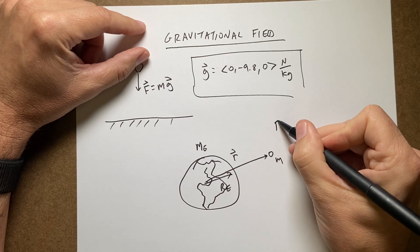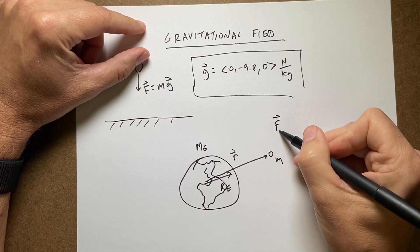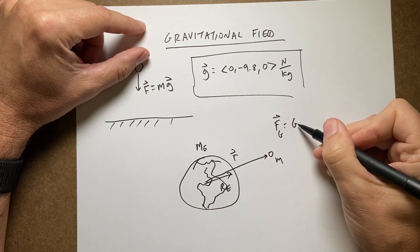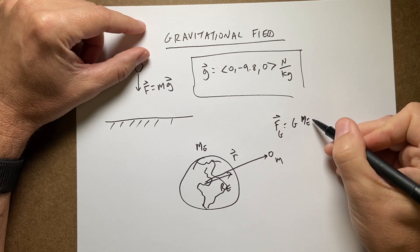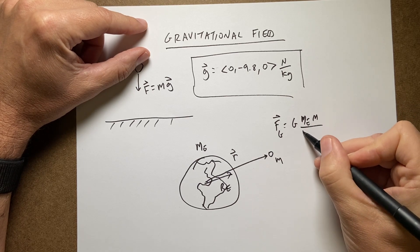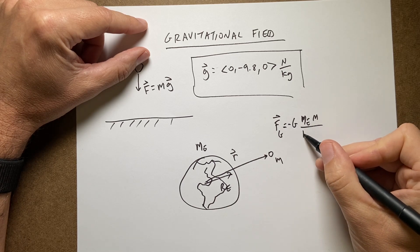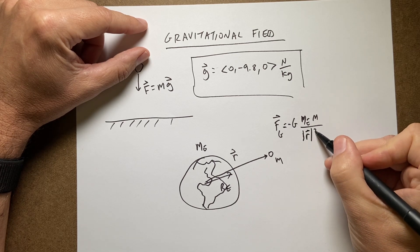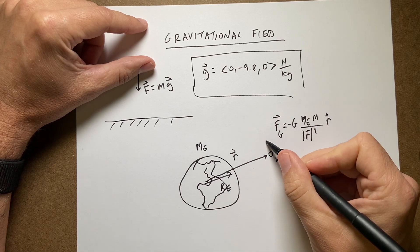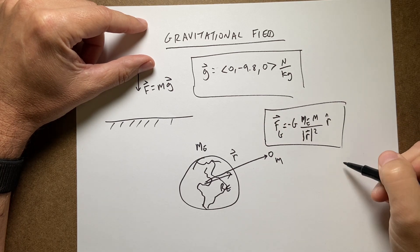Then I can calculate the gravitational force, F_g, is G times mass of the earth times mass, over the magnitude of r squared, this is going to be negative, r hat. And I went over this before.